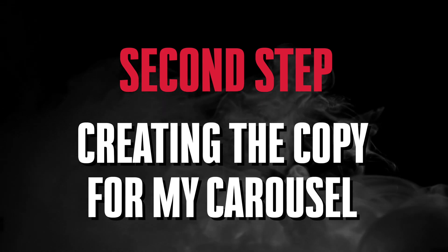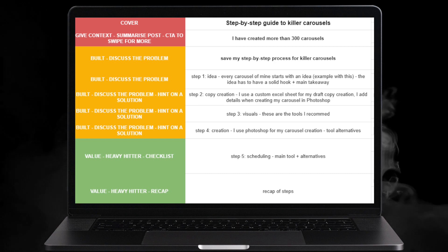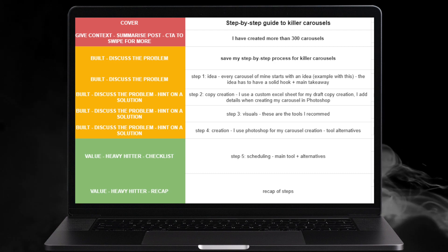Once the idea is there, the next step is creating the copy for my carousel. I use a custom created Excel sheet which enables me to follow a structure and create my copy draft in a matter of minutes. I create all of my text drafts really quickly in as natural a momentum as possible, because by doing so, when people are reading my content, they can feel like I am speaking directly to them, just like I am speaking directly to the camera right now.